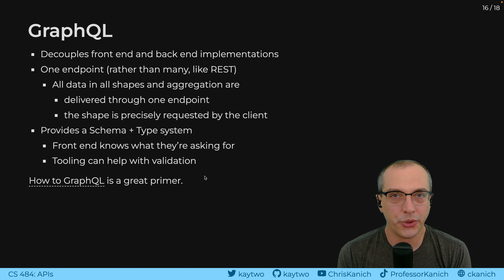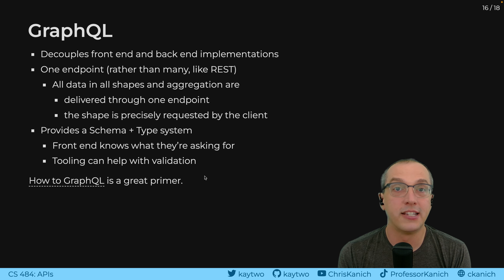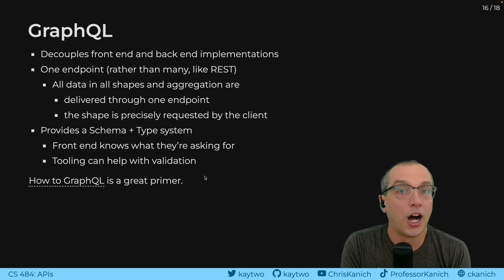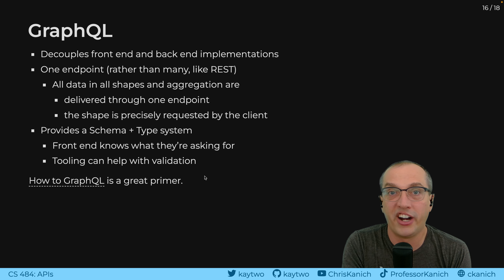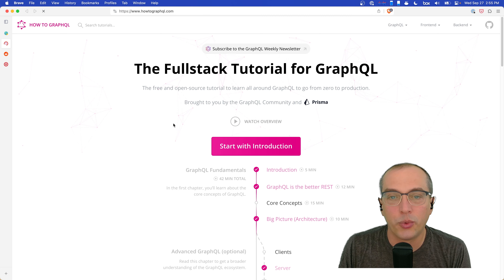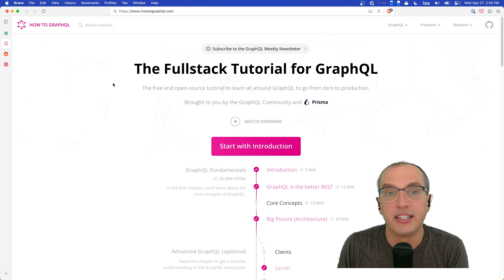GraphQL's type system defines your objects and APIs, making programming easier, especially in an IDE that provides IntelliSense-style features because it knows the types of variables you're using. The website HowToGraphQL.com is a really great way to learn more about GraphQL. I highly recommend checking it out if you want to be able to talk about it convincingly in a job interview.